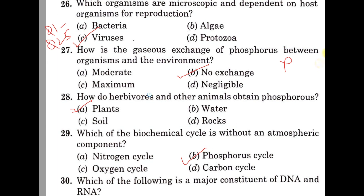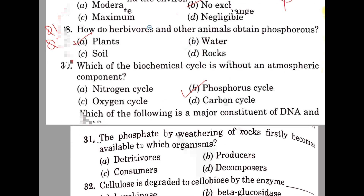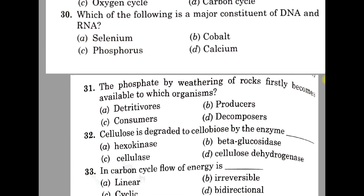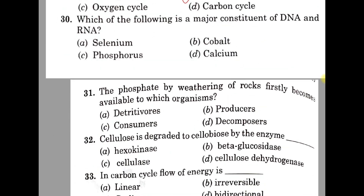Question number 30. Which of the following is a major constituent of DNA and RNA? A: Selenium, B: Cobalt, C: Phosphorus, D: Calcium. The question is very simple and the correct answer is option C, Phosphorus.